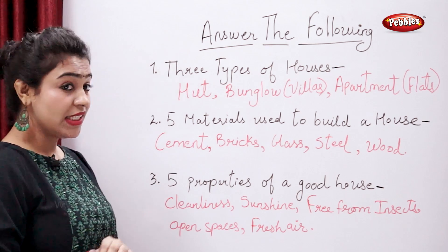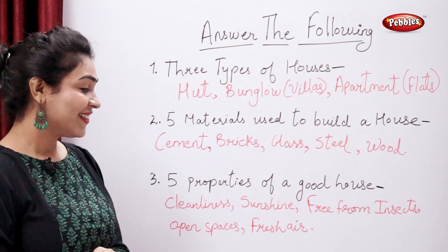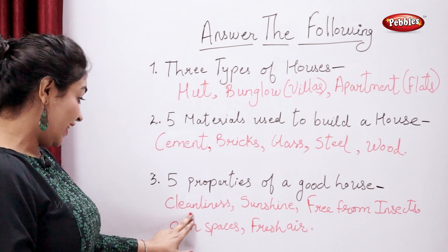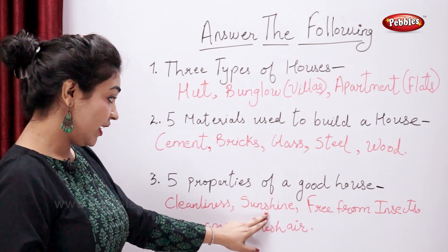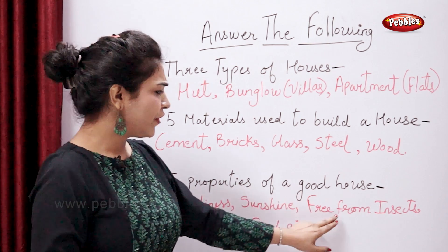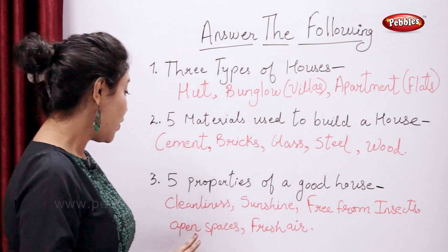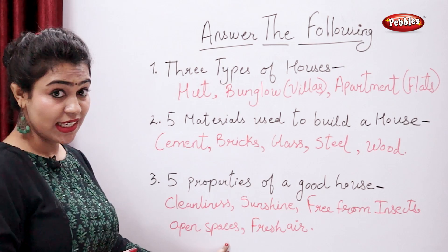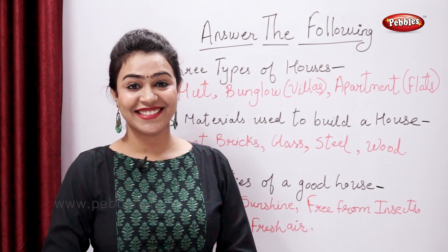Five properties of a good house: cleanliness, sunshine, free from insects, open spaces, and fresh air.